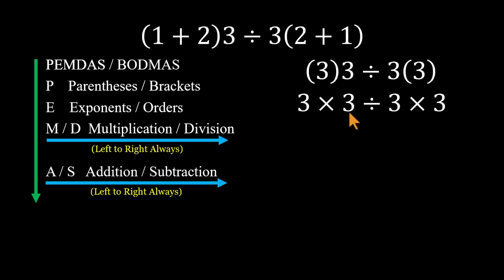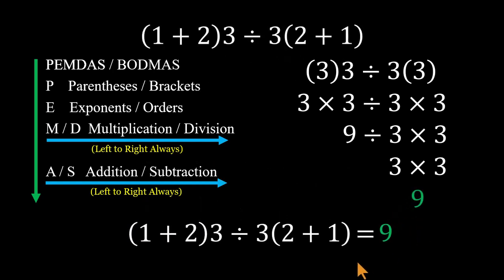Equal priority. So first, 3 times 3 equals 9. Next, 9 divided by 3 equals 3. And finally, 3 times 3 equals 9. That's the correct answer. 9.